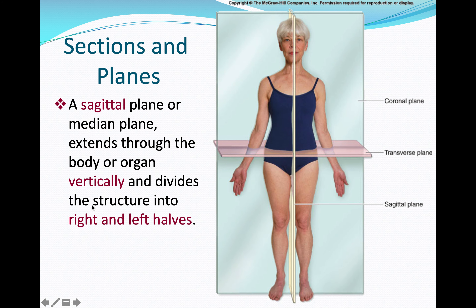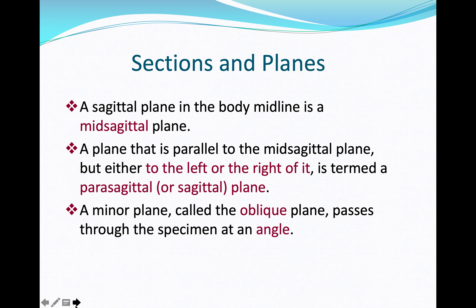The sagittal plane, also called the median plane, extends vertically and divides the body into right and left. The mid-sagittal plane passes directly down the midline; the parasagittal plane is parallel to it but shifted left or right. There is also the oblique plane, which passes through the specimen at an angle.